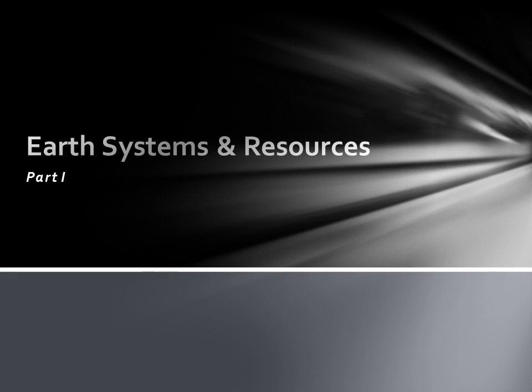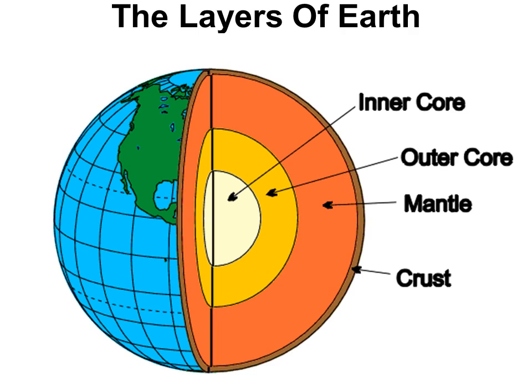Today we're going to shift gears and talk some geology, starting with the layers of the earth. You don't need to memorize exact temperatures or diameters, but you should have a general sense of the layers: starting with the inner core, moving out to the outer core, the mantle, and the crust. The inner core and the outer core are made of iron and nickel.